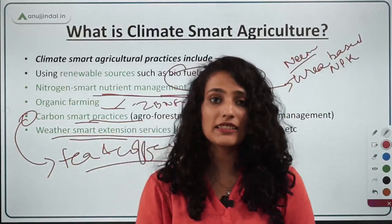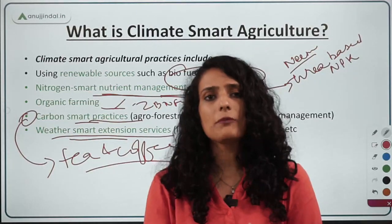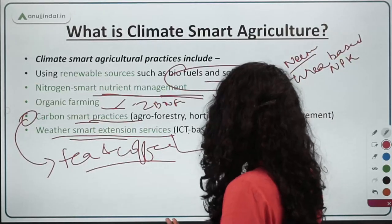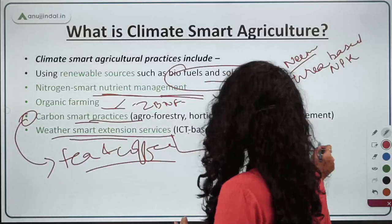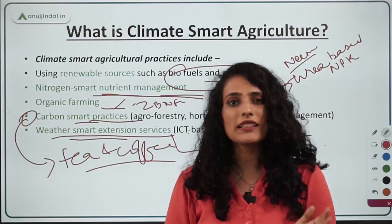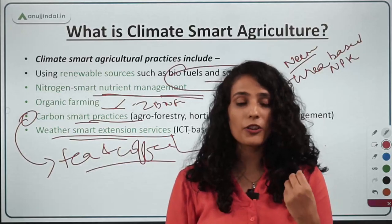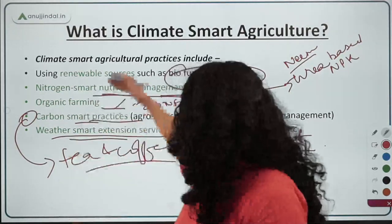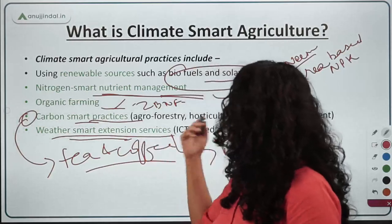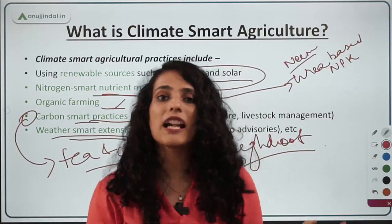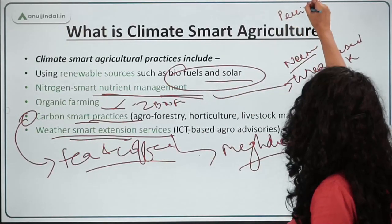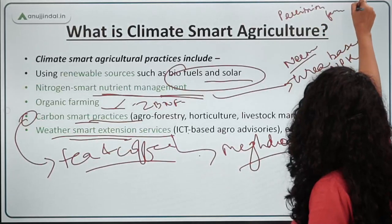The MOU between IMD and Fasal, and the Meghdoot app, are examples of weather smart extension services. All of the practices discussed — millets, climate resilient farming, crop diversification, renewable resources, zero budget natural farming, smart weather services, and organic farming — come under climate smart agriculture. We also saw a diagram related to precision farming.